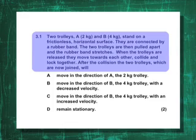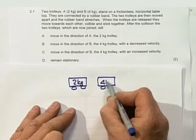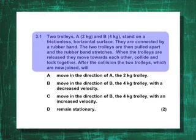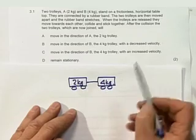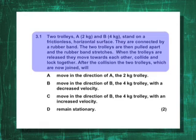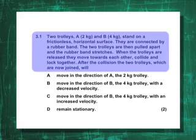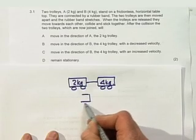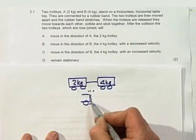First question: we've got two trolleys, a 2 kg trolley and a 4 kg trolley. They stand on a frictionless horizontal tabletop. They're connected by a rubber band, an elastic band. The two trolleys are then moved apart—in other words, we stretch that rubber band, move them apart. When the trolleys are released, they move towards each other, collide, and stick together.